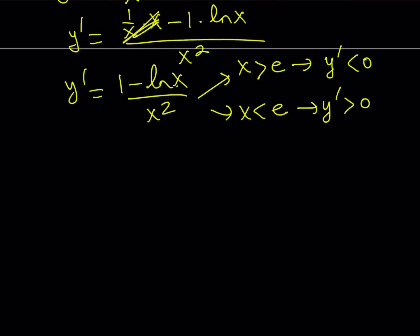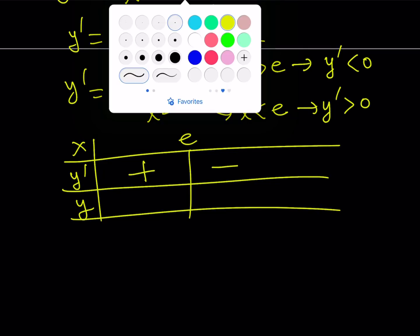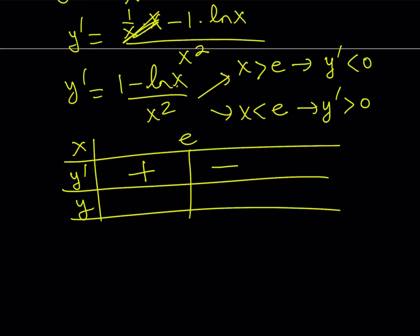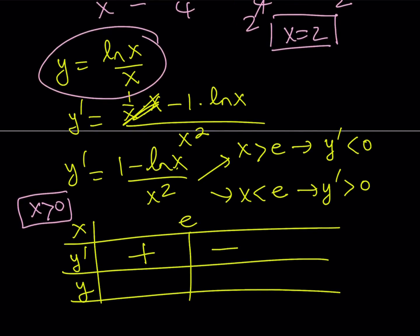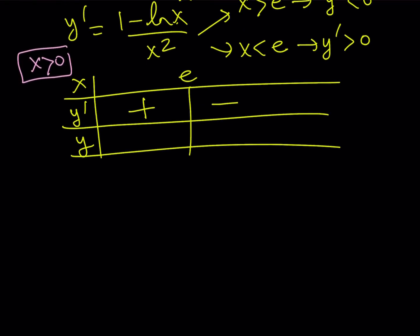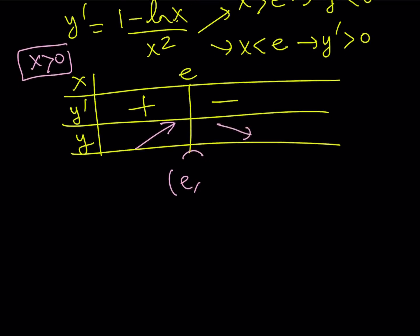Let's make a table with x, y prime, and y. The only critical value is e. If x is greater than e, y prime is negative; otherwise it's positive. The domain requires x greater than 0 since we're dealing with a logarithm. So our function increases then decreases, making a maximum at x equals e, and the y value at that point is 1 over e.